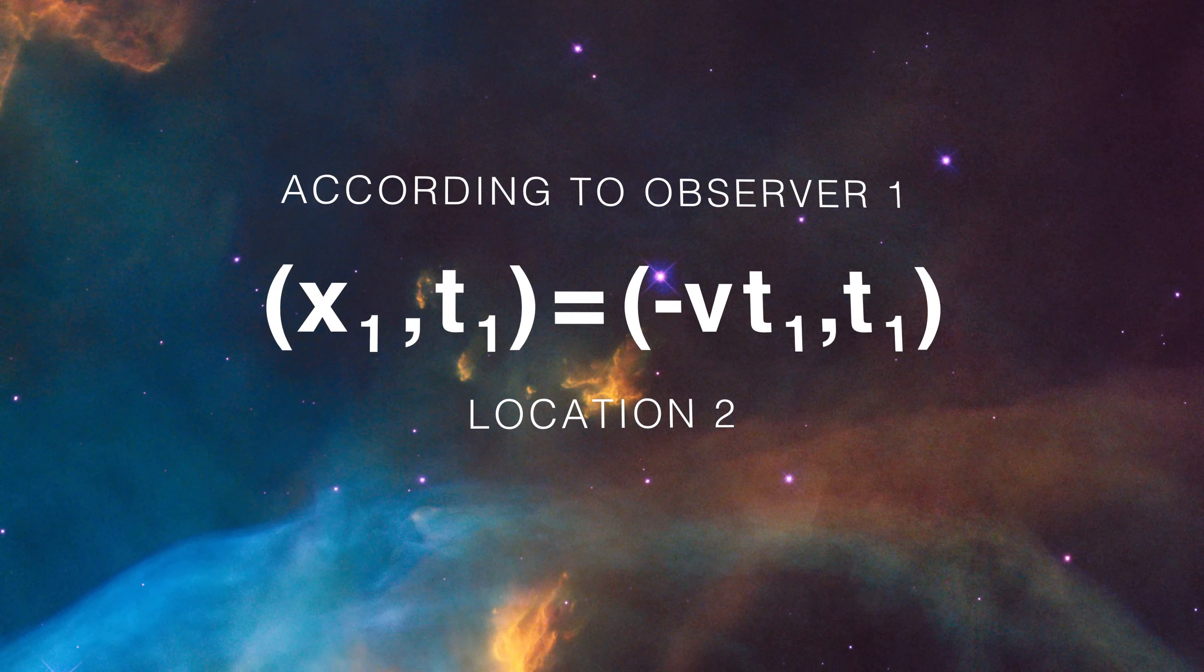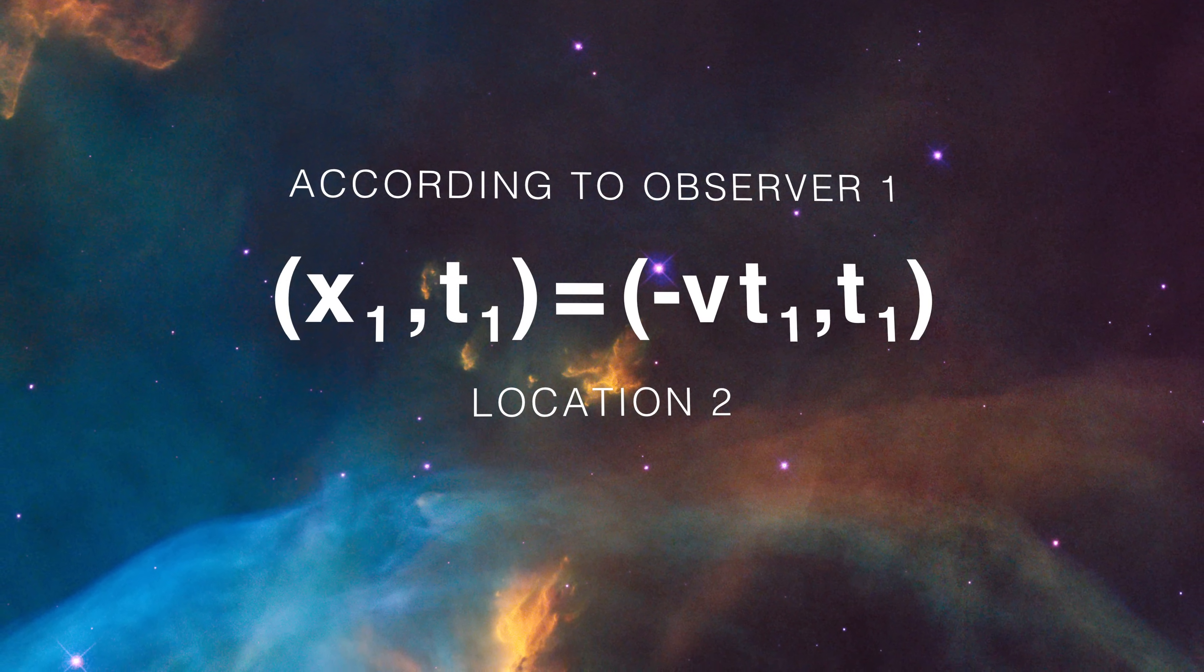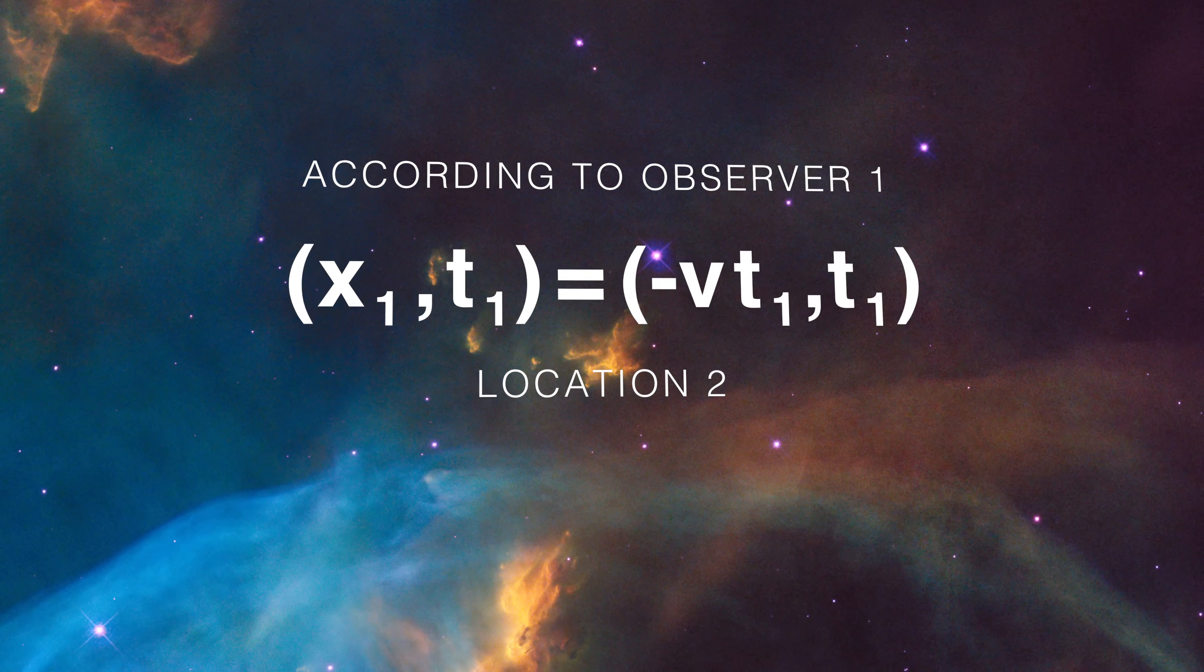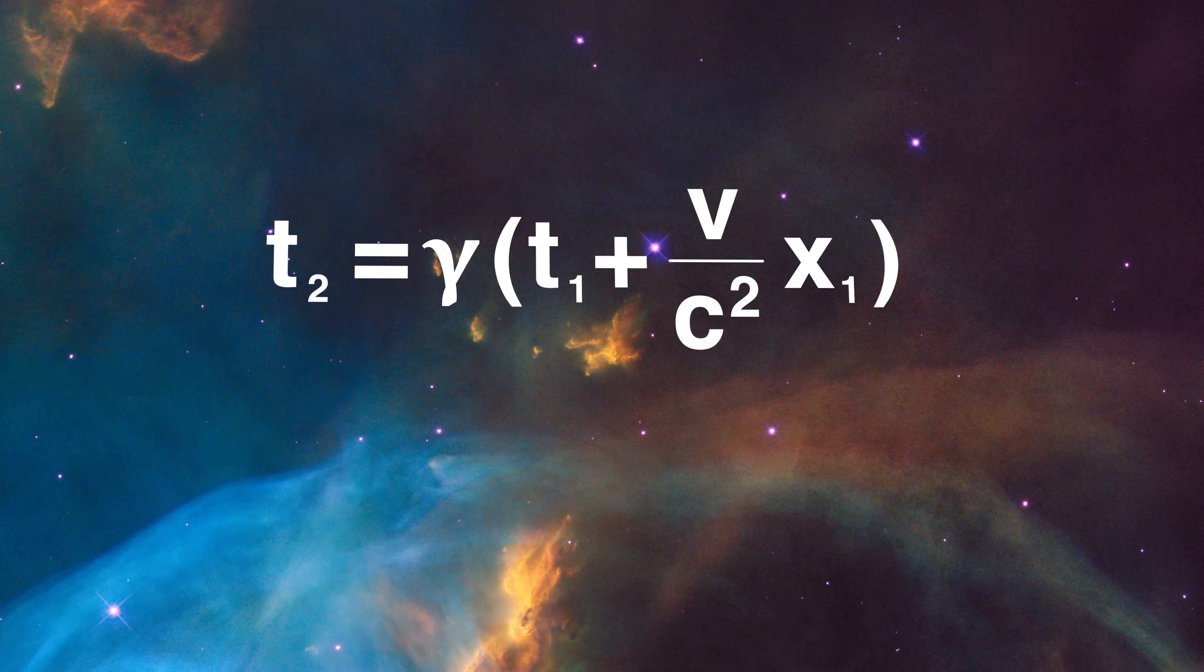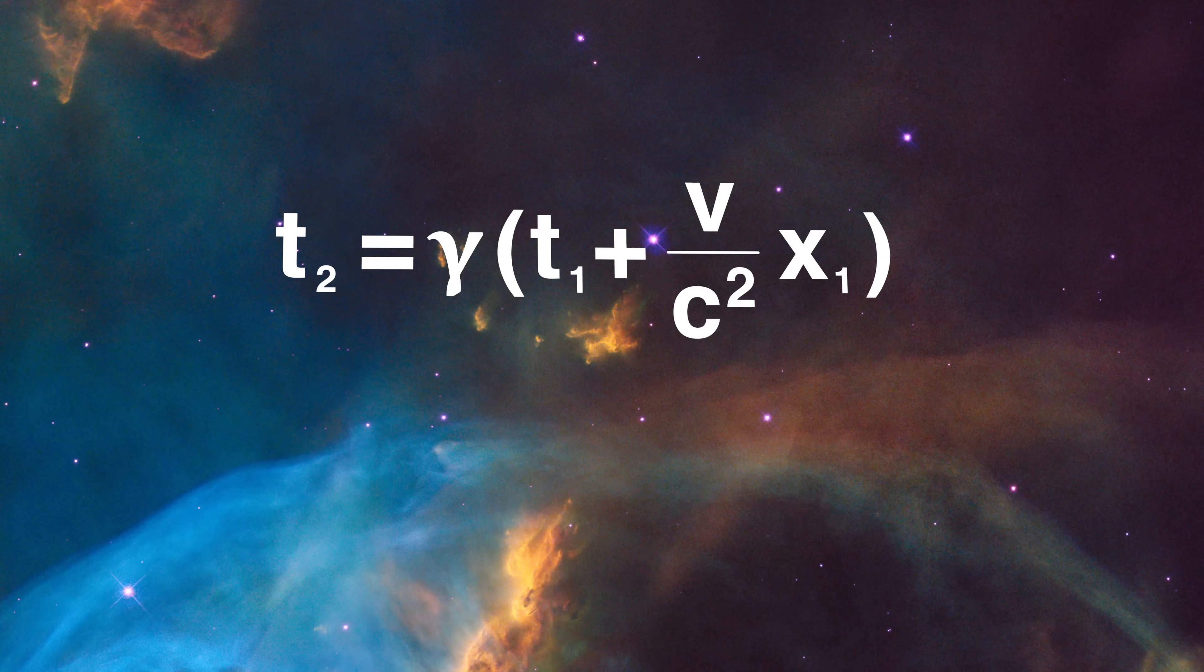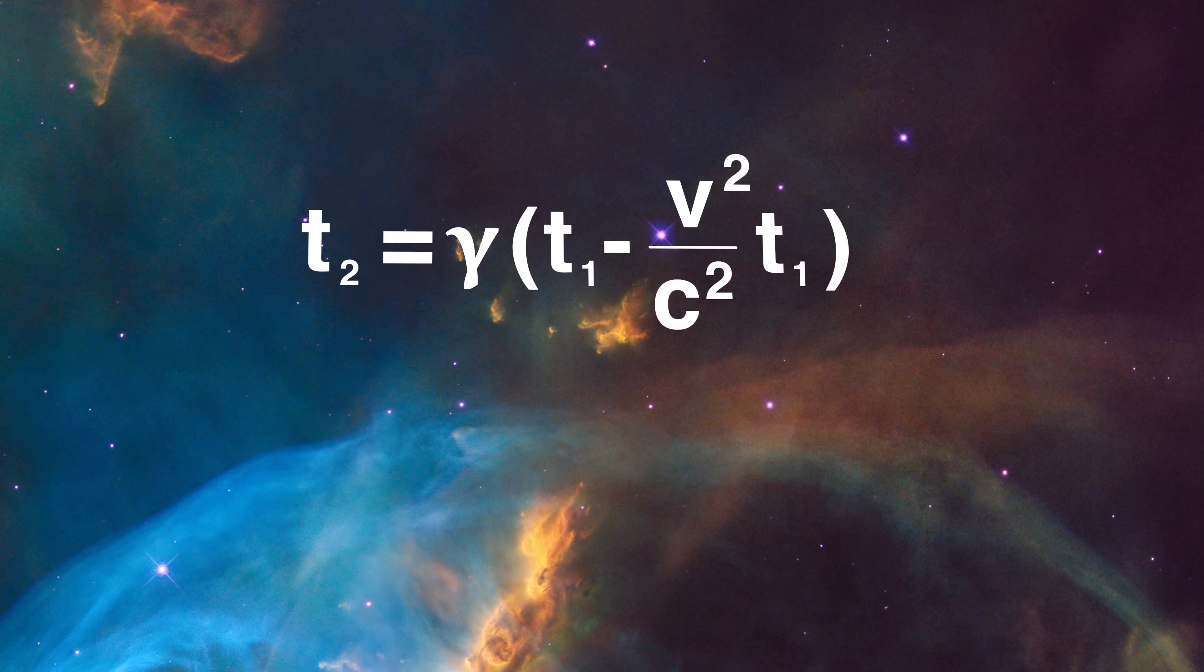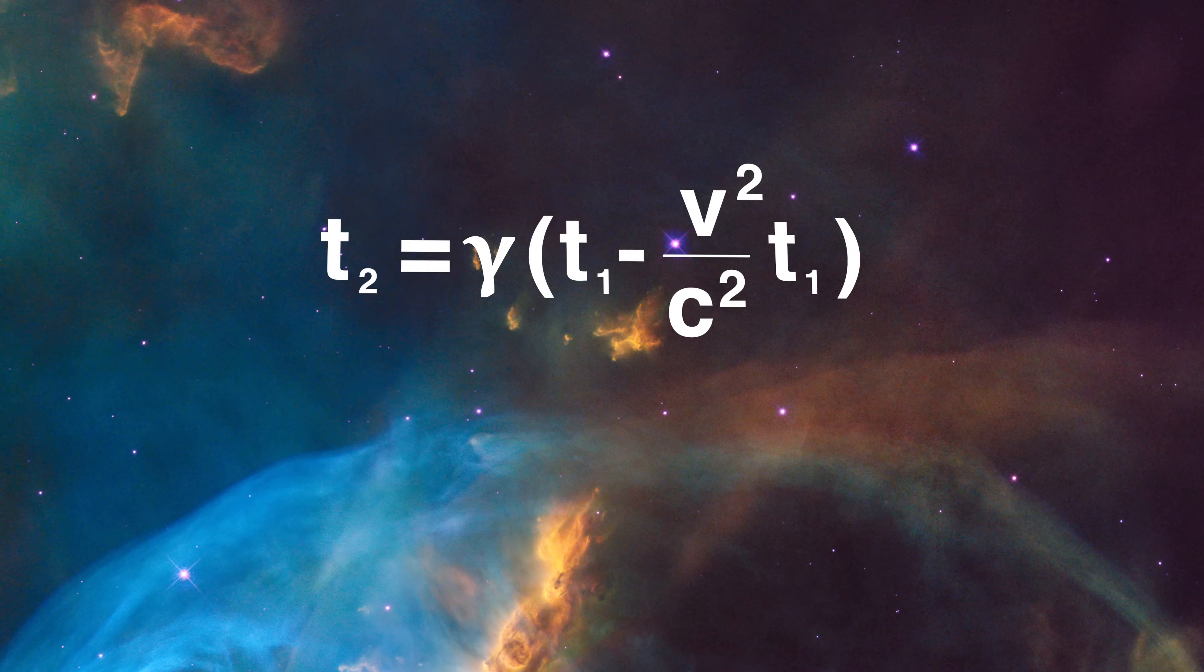Now let's do the same thing for how Observer 2 sees what Observer 1 sees at Observer 2's location. Remember that Observer 1 sees this location as x sub 1, t sub 1 equals minus v t sub 1, t sub 1. We start with the equation t sub 2 equals gamma times the quantity t sub 1 plus v over c squared times x sub 1. We put in the x and t seen by Observer 1. Thus, we get that t sub 2 equals gamma times the quantity t sub 1 minus v squared over c squared times t sub 1. So that's pretty easy.